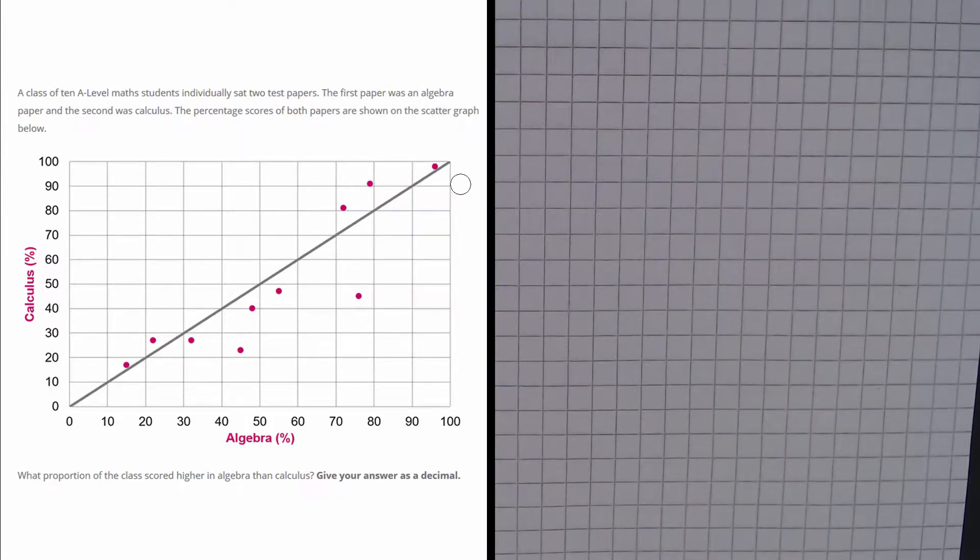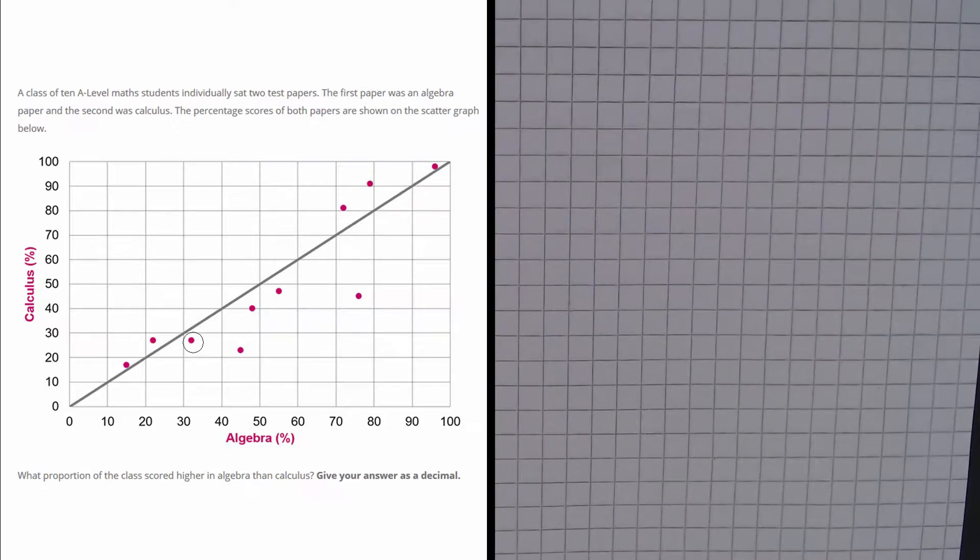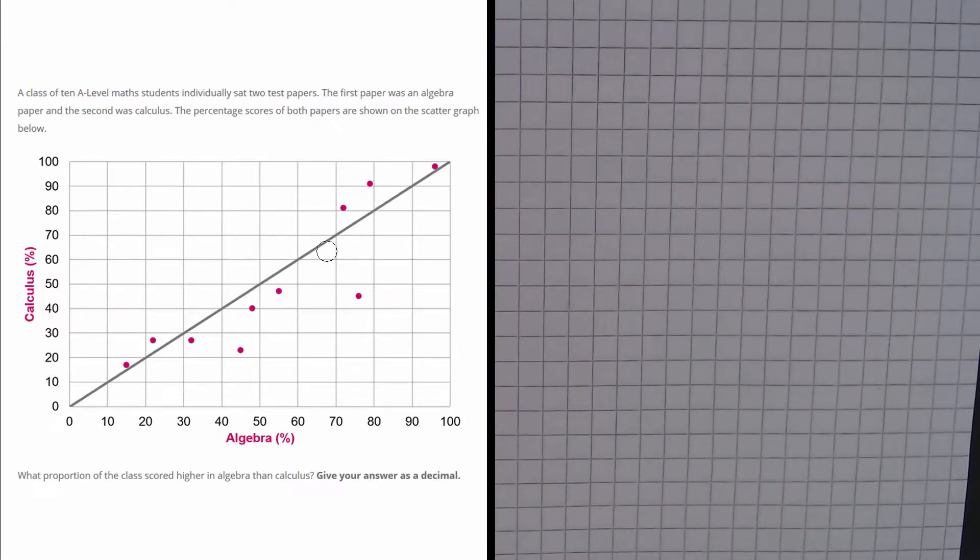Now you'll notice in this scatter graph, the y equals x line is drawn, this grey line here. And what that shows is that if there were any points on this line, they got exactly the same mark in Calculus as they did in Algebra.